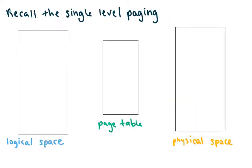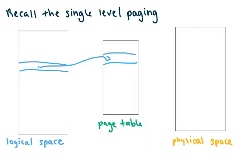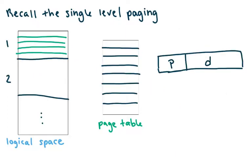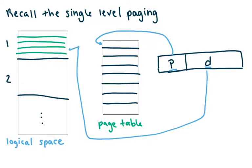Recall single-level paging. We had our logical address space, and based on the virtual address generated by the CPU, we were able to take this address, look into a page table, and the page table told us the frame number so we could see where it was in the physical space. Each address had a page number portion to index into the page table, and an offset to tell it where in the actual page it was sitting.